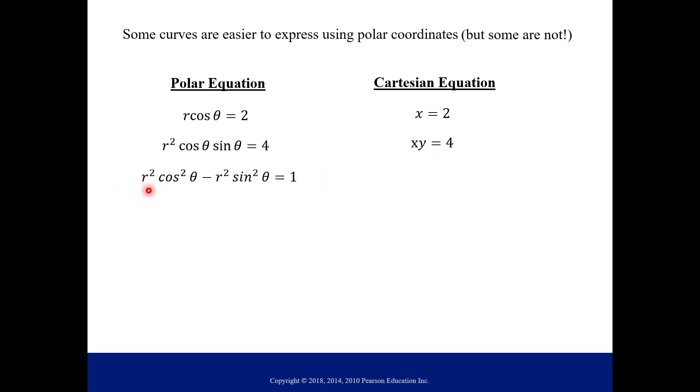Some more examples, r squared cosine squared theta minus r squared sine squared theta equals 1. Well, if we rewrote this using our relationship between polar and Cartesian, you would just have x squared minus y squared equals 1. But how about this one? Look at how this equation looks in polar, r equals 1 minus cosine theta, and look how it looks in Cartesian. So here's that part where maybe polar is easier to express this curve than Cartesian coordinates would be, but you can switch back and forth when you need to.